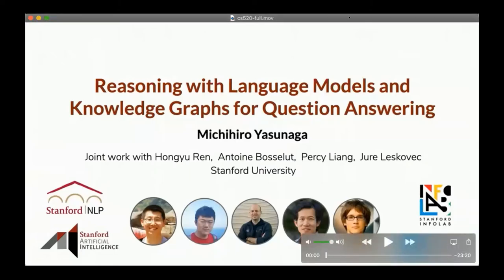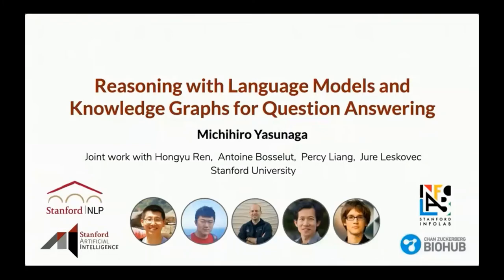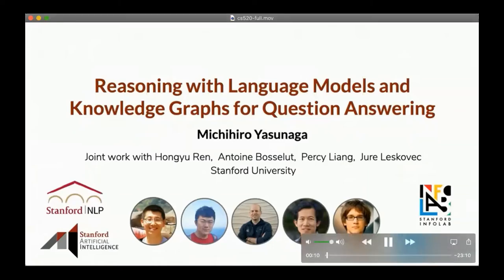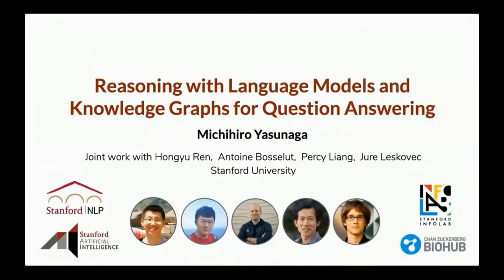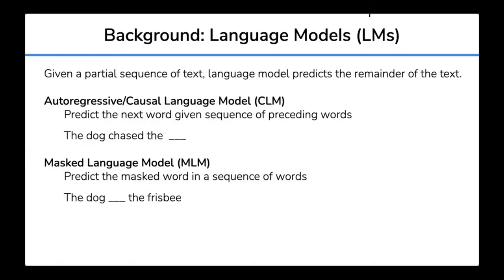Sure, let me share my screen. Do people see my screen? Yes, we can see it. Then let me start. Thank you for inviting me to give a talk. I'm Michi, a PhD student working on natural language processing in the CS department. I'll be talking about our recent work on question answering using pre-trained language models and knowledge graphs. This is a joint work with my collaborators Hongyu, Antoine, and my advisors Percy and Yuri. Before jumping into the main work, let me first give a brief overview of language models and graph neural networks, because they are important building blocks alongside knowledge graphs in this talk.